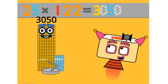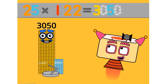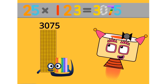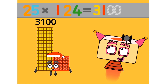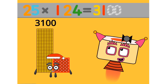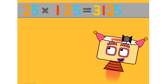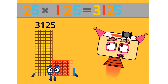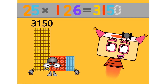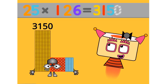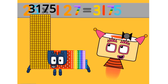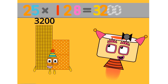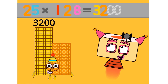25 times 123 equals 3075. 25 times 124 equals 3100. 25 times 125 equals 3125. 25 times 126 equals 3150. 25 times 127 equals 3175. 25 times 128 equals 3200.